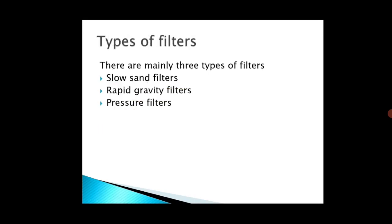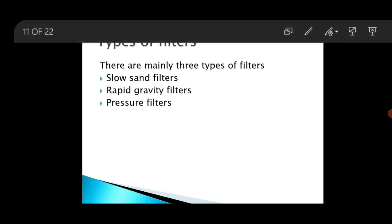Next we will discuss the types of filter. There are mainly three different types: one is slow sand filter, second is rapid gravity filter, and third is pressure filter. First we will discuss slow sand filters.